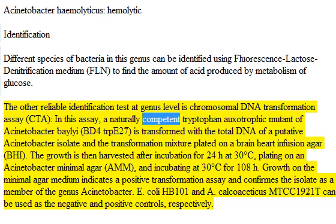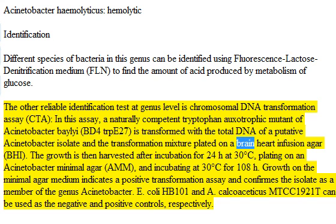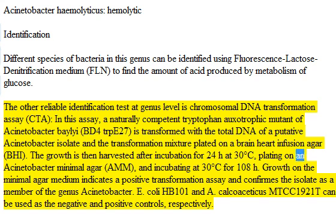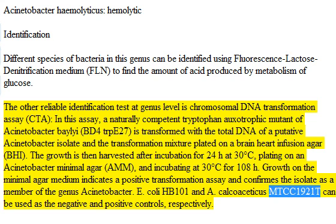In the CTA, a naturally competent tryptophan-auxotrophic mutant of Acinetobacter baylyi, BD4TRPE27, is transformed with the total DNA of a putative Acinetobacter isolate, and the transformation mixture is plated on brain-heart infusion agar (BHI). Growth is harvested after incubation for 24 hours at 30°C, then plated on Acinetobacter minimal agar (AMM) and incubated at 30°C for 108 hours. Growth on the minimal agar medium indicates a positive transformation assay and confirms the isolate as a member of the genus Acinetobacter. E. coli HB101 and A. calcoaceticus MTCC1921T can be used as the negative and positive controls, respectively.